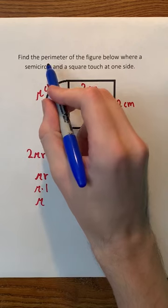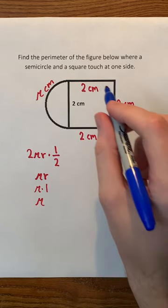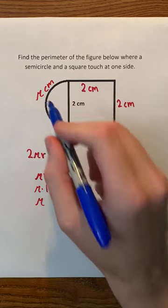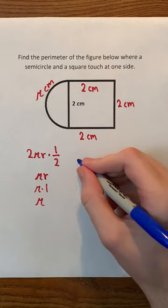Lastly, to find the perimeter, we can just add 2 centimeters 3 times, and then add π centimeters to that. 2 plus 2 plus 2 is just 6.